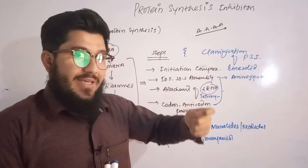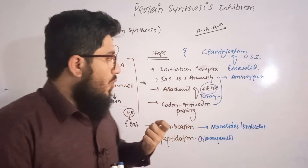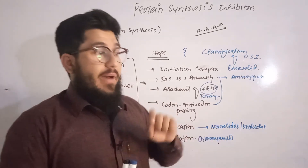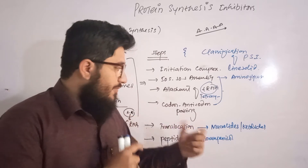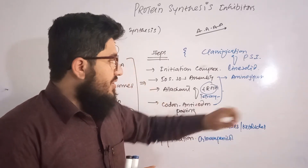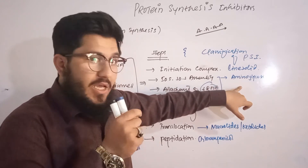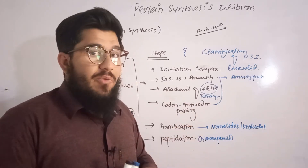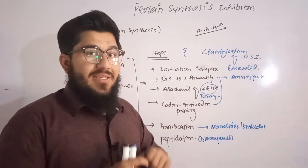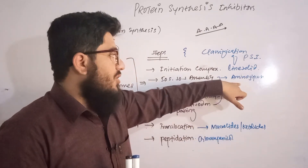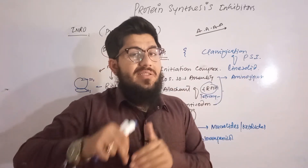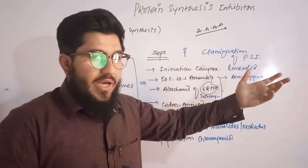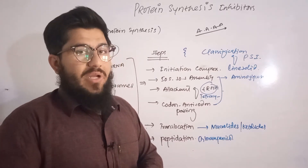The aminoglycosides include amikacin, kanamycin, neomycin, and similar drugs. Note that not all '-mycin' names are aminoglycosides — macrolides also include '-mycin' names such as erythromycin, clarithromycin, and azithromycin. To avoid confusion between macrolides and aminoglycosides, remember three or four specific names from each class.